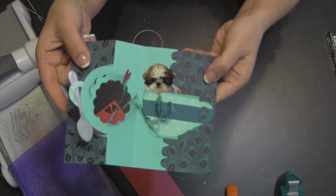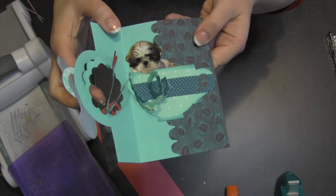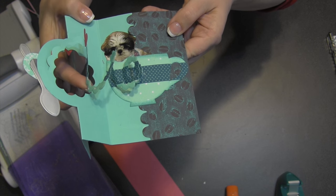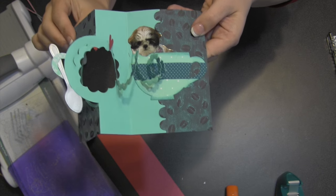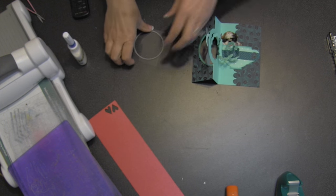I also die cut some red hearts from the spiral circle set, added one to the spiral, one to the front of the card. I am noticing my spiral coming through the hole to the front of the card. I'm not crazy about that, so I think the way I'm going to fix it is I'm going to add a window pane to the card.